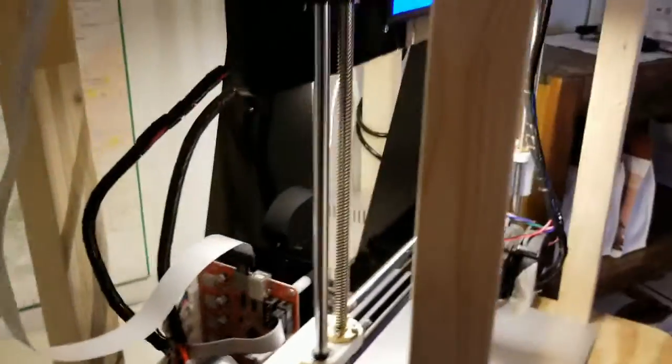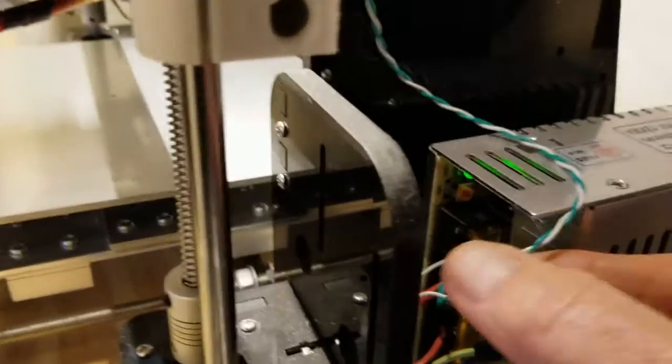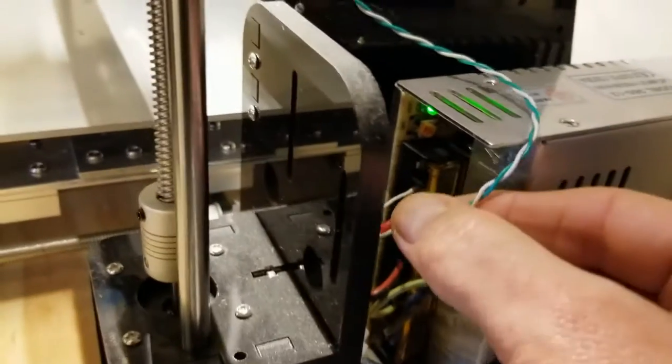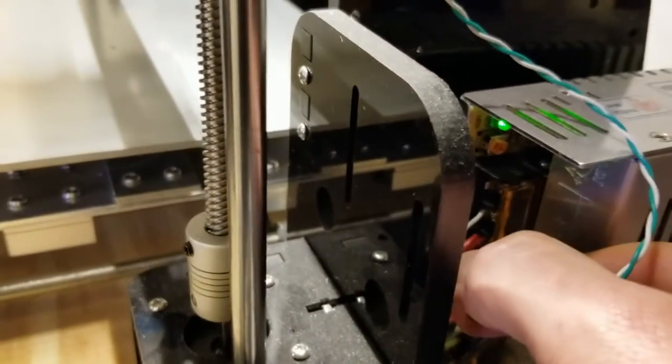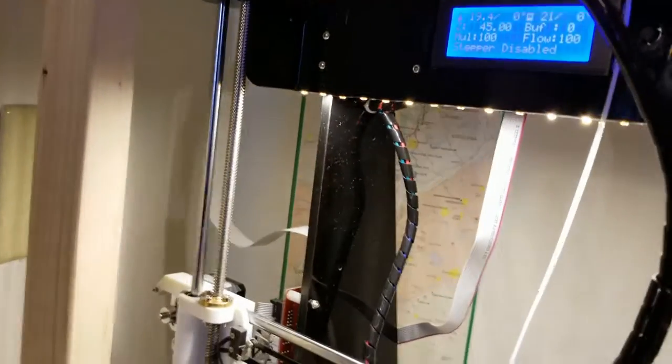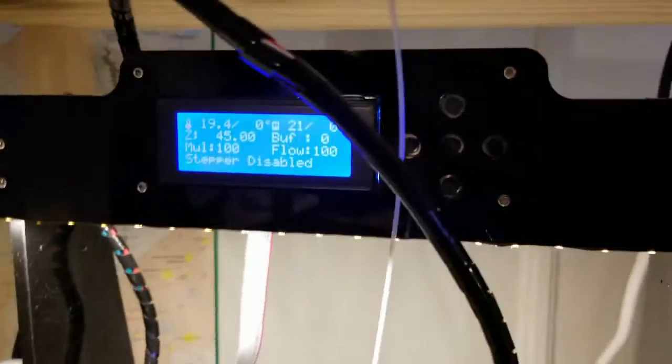Something else that we've added are these nice LED strip lights here. And those simply plug into this around. Those are just dummy lights. They just plug into the power supply here at five volts and ground just light that up. It just makes the workspace nice and bright so you can easily work on it.